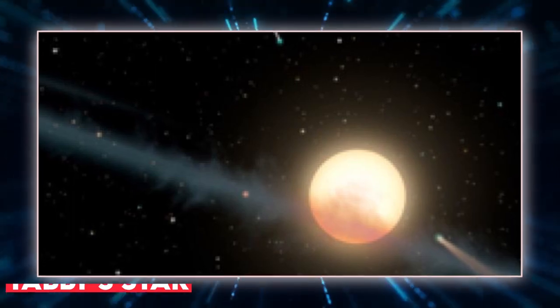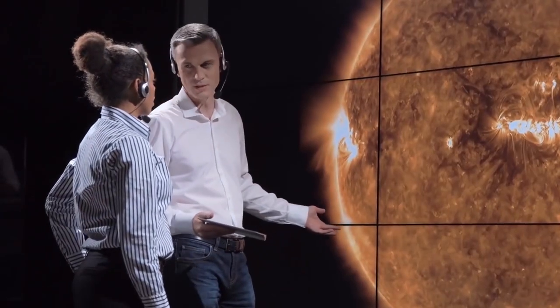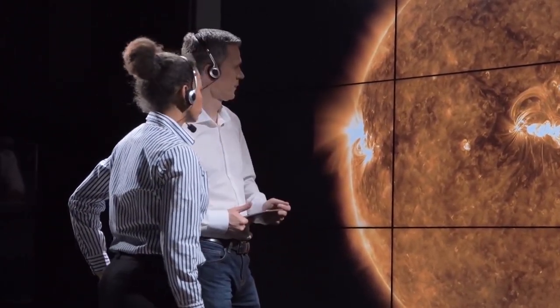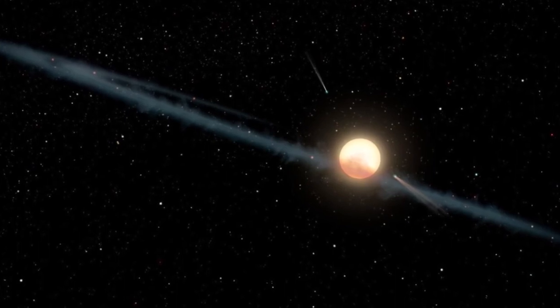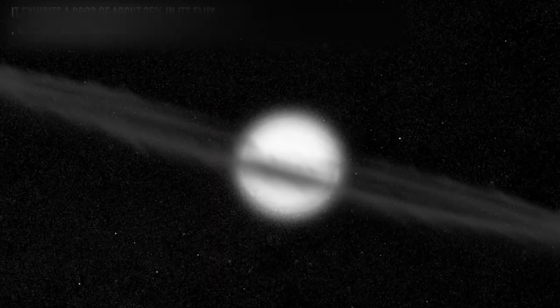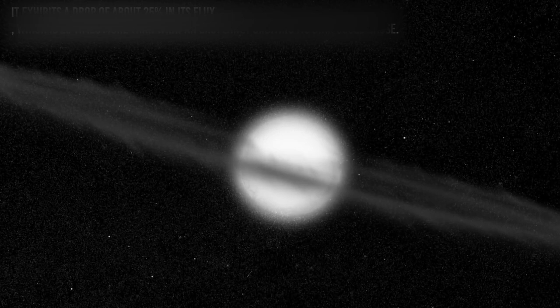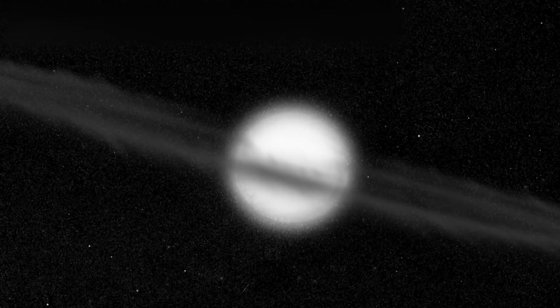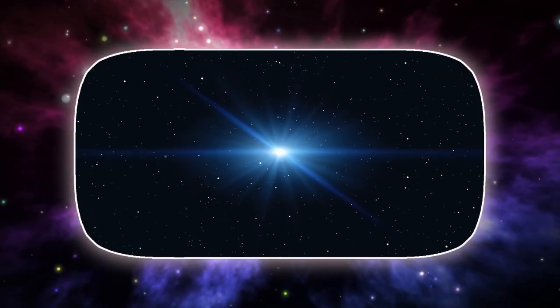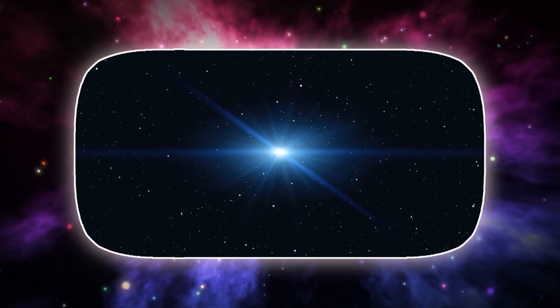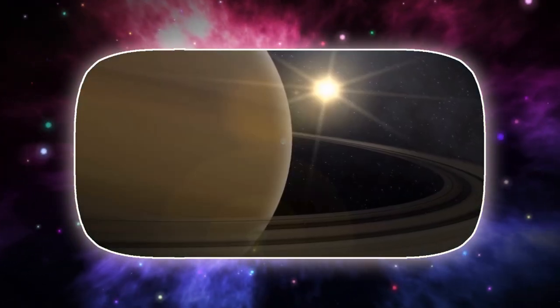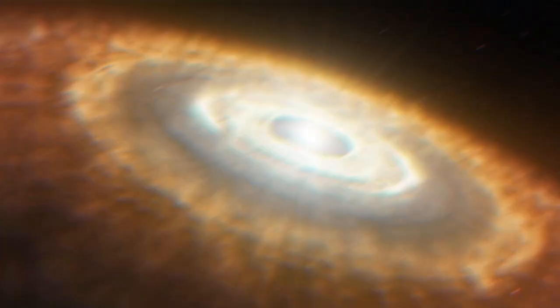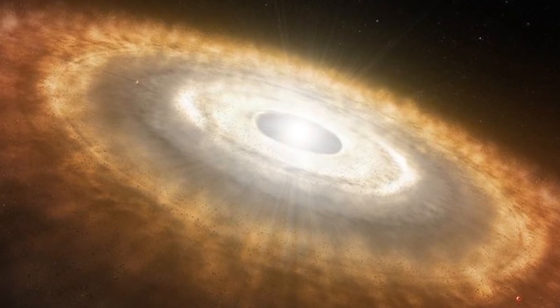Next, we got Tabby's star here. When Louisiana State University astronomer Tabitha Boyajian first saw this object, nearly 1,500 light-years distant in the constellation Cygnus, she realized something was wrong. At odd and irregular periods, the star, then known by its romantic official designation KIC 846285, was fading by up to a fourth of its brightness. What's the big deal about that? The brightness of a faraway star dims with time when orbiting bodies such as planets pass between it and us, for example. Normal fading, on the other hand, is consistent and predictable.